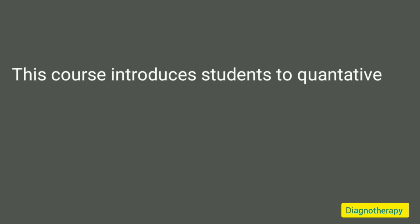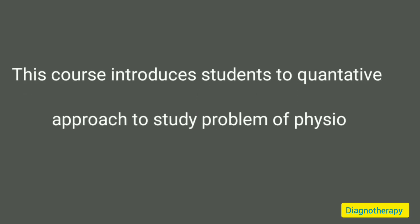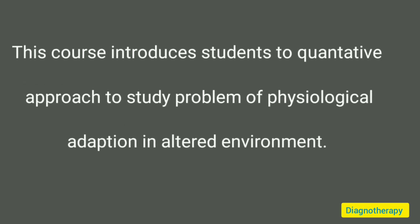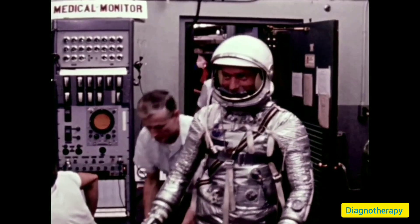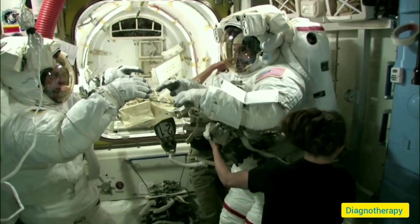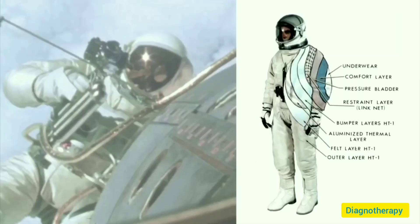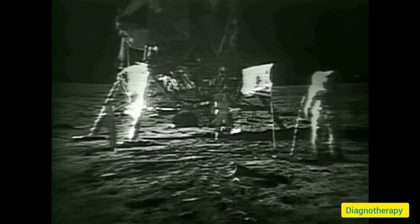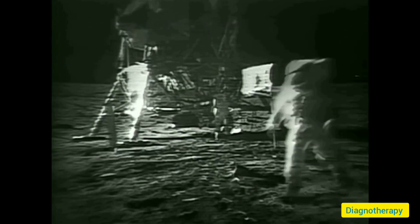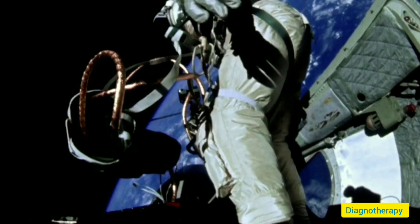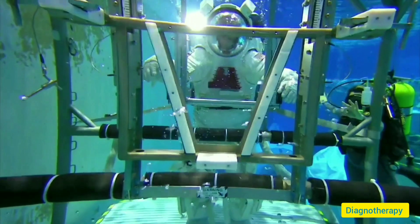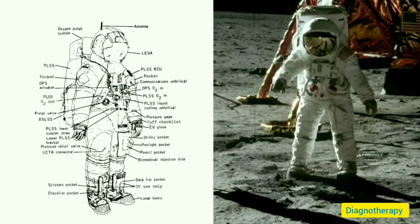This course introduces students to a quantitative approach to studying the problems of physiological adaptation in altered environments, especially microgravity and partial gravity environments. The curriculum starts with an introduction and selected topics, which provides background information on physiological problems associated with human spaceflight, as well as reviewing terminology and key engineering concepts.